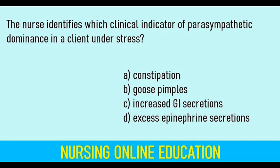The nurse identifies which clinical indicator of parasympathetic dominance in a client under stress. Options — Constipation, Goose pimples, Increased GI secretion, Excess epinephrine secretion. Answer: Increased GI secretions. This is parasympathetic dominance. Normally in parasympathetic dominance: increased GI secretions, increased GI motility.